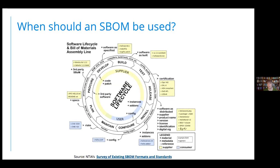As you build it, you might want to generate it automatically so that you have a definitive source. When you go and release it, you've done some testing, you may want to augment it with results and certifications. When you're shipping it, someone may be asking you for the software bill of materials. So pretty much anywhere in the lifecycle, we want to be able to set up the ecosystem so we can generate these things, and that's going to take some tooling.